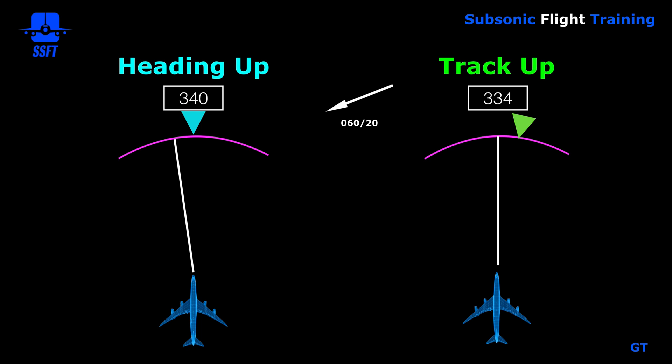In some jet aircraft the display can be heading up, where heading is displayed at the top. In some aircraft you can have track-up displays. You can also have one instrument showing heading up and another showing track up. Sometimes this is an airline option — for example, they may want the ND to be a track-up or heading-up display. In most cases, most airlines want the ND to be a track-up display, but the heading display on the PFD will be a heading-up display.